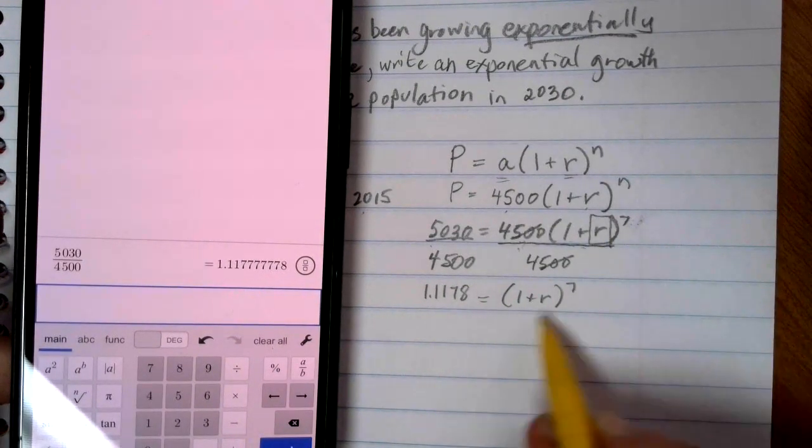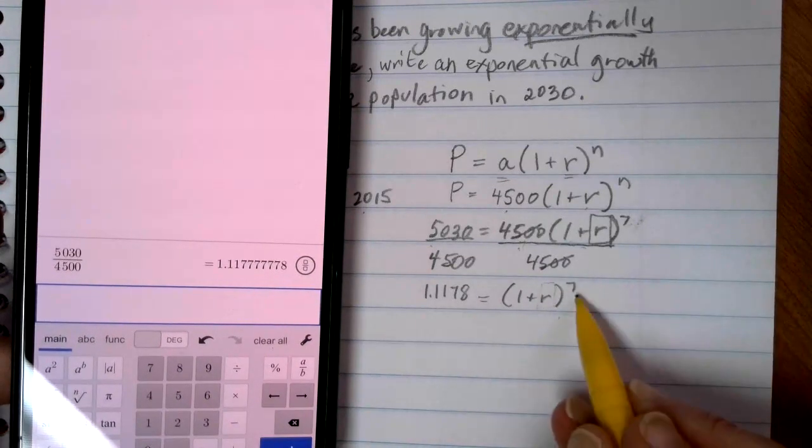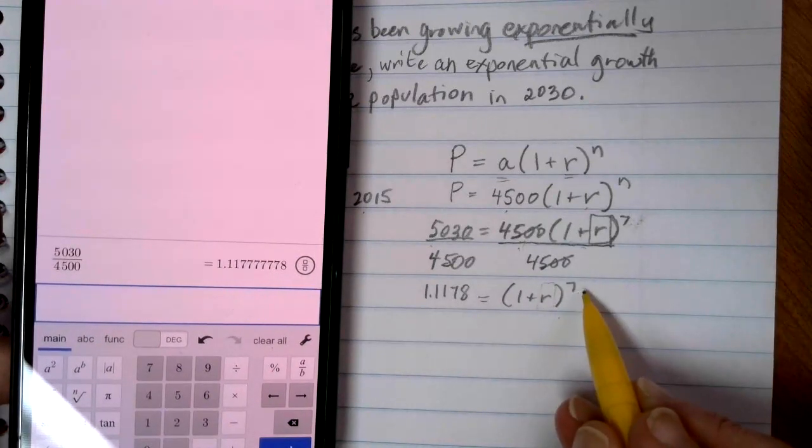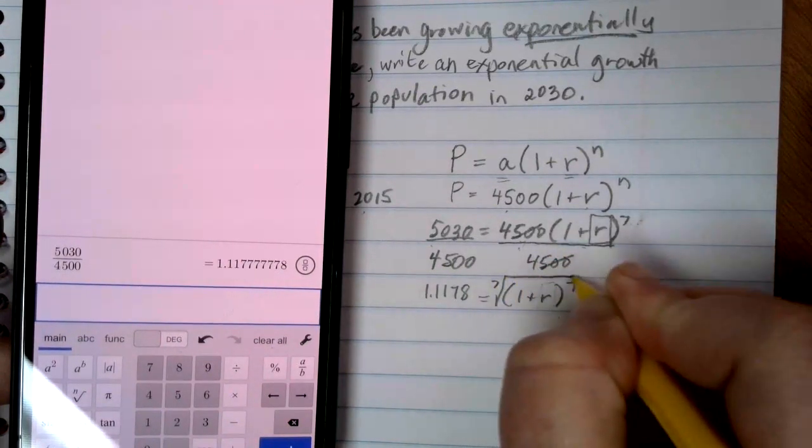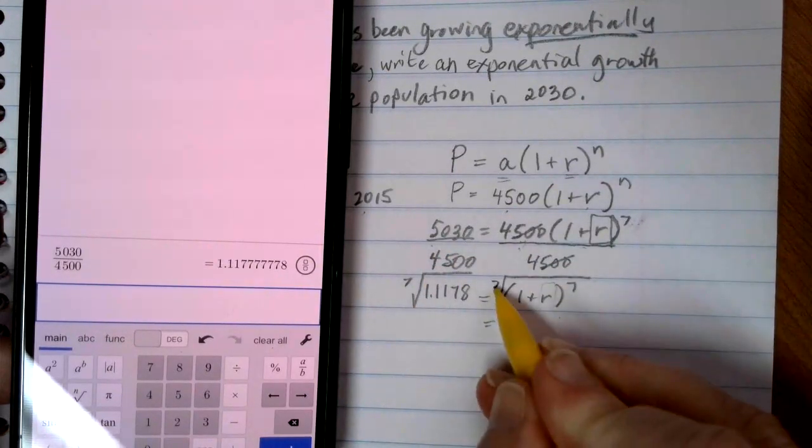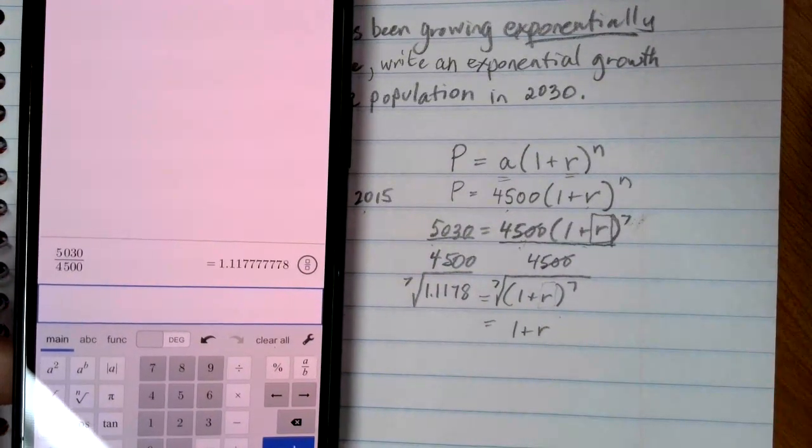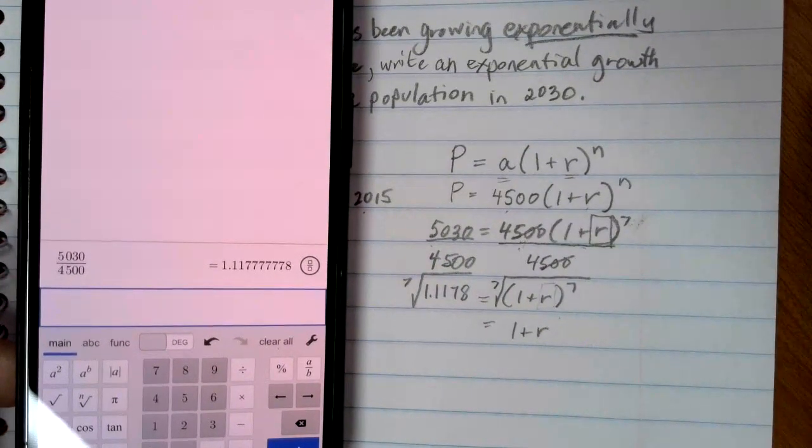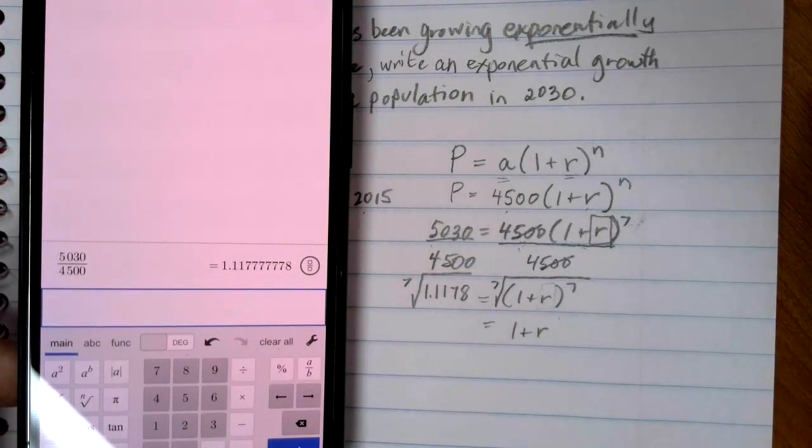Keep in mind that I can just keep this whole expression in Desmos and use that answer so I don't have to worry about making any mistakes. The next thing that I need to do is I still want to get the R by itself. I have to get rid of the 7th power next. The opposite of a power is a root, so I'm going to take the 7th root of each side. On the right side, the 7th root and the 7th power undo each other and leave me just with 1 plus R.